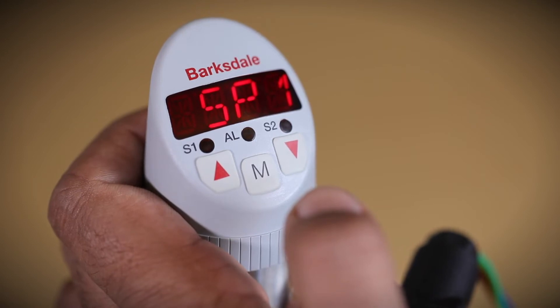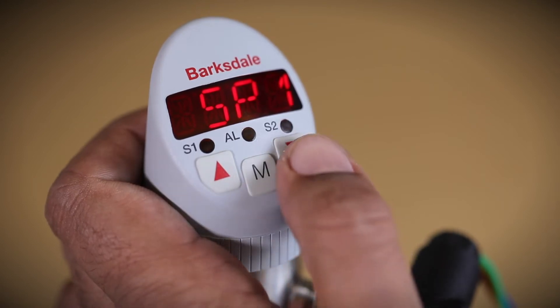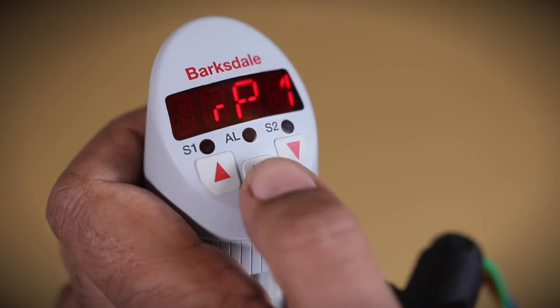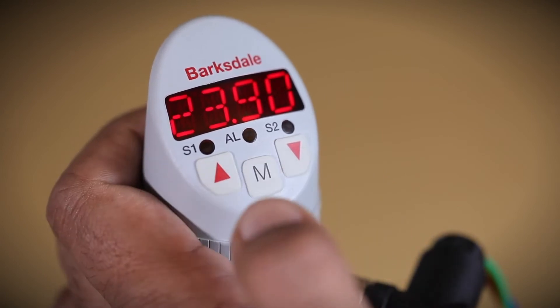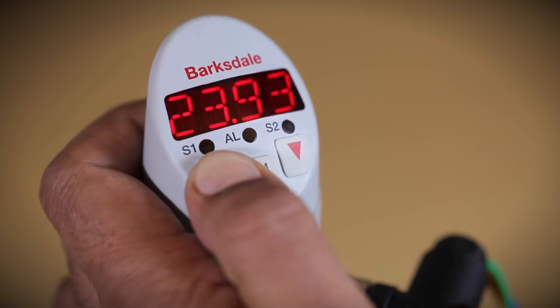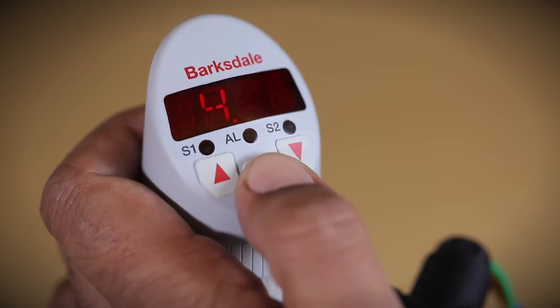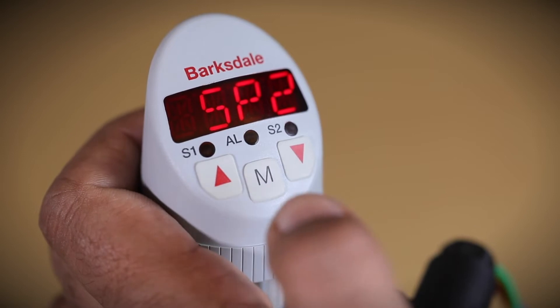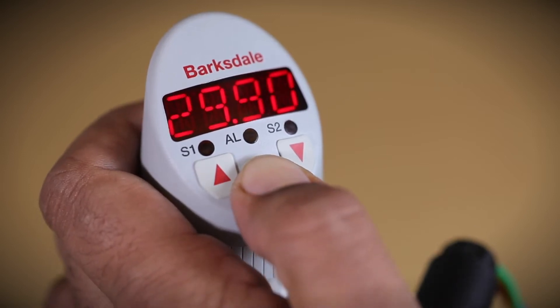To set the hysteresis for switch point 1, press descending navigation key and select RP1. Adjust and set the value by pressing the menu key. Follow similar steps to set the values for switch point 2.